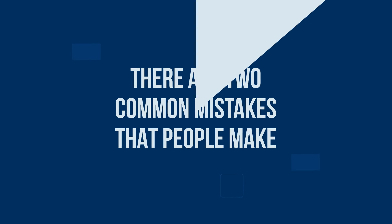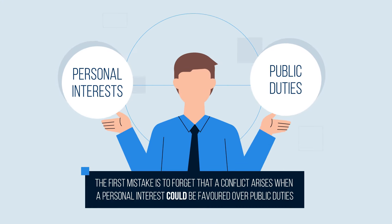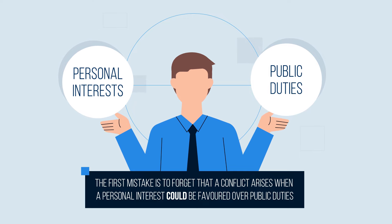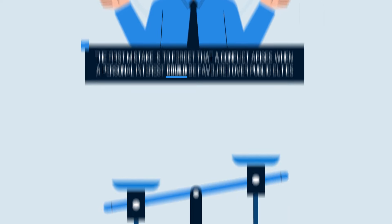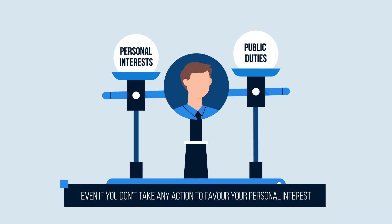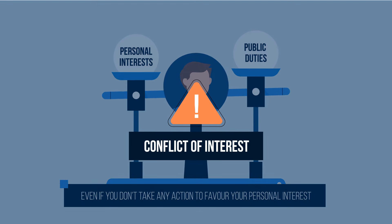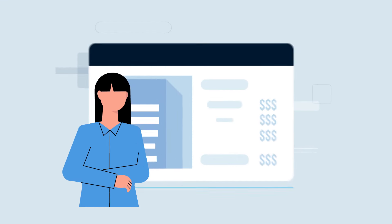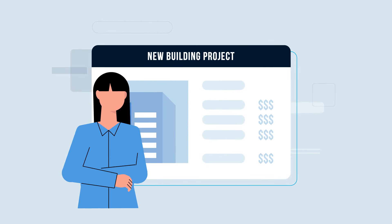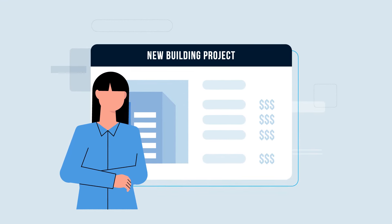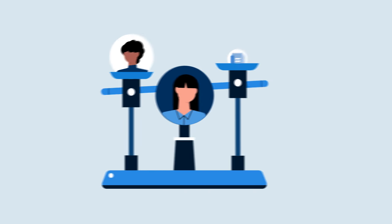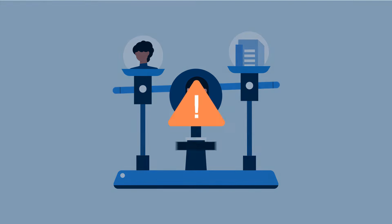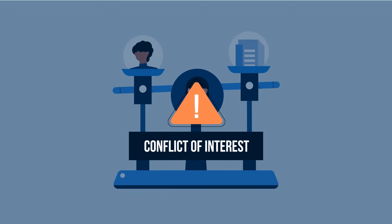There are two common mistakes that people make. The first mistake is to forget that a conflict arises when a personal interest could be favoured over public duties. Even if you don't take any action to favour your personal interest, you still have a conflict of interest. For example, if a public official is working on a tender at a university and knows that her friend wants to submit a bid, she has a conflict of interest, even if she never does anything to benefit her friend.